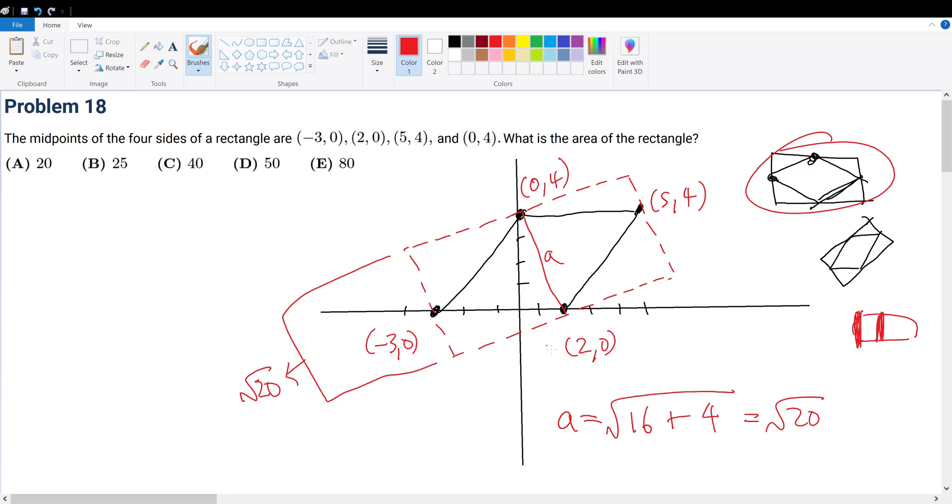But what about this height right here? Well, we also know that distance, because if we draw out this diagonal, and I call that diagonal B, B will be equal to, from the distance formula, 4 minus 0 squared, 16, plus 5 minus negative 3 squared, 64. And that will be equal to root 80.